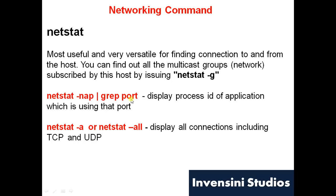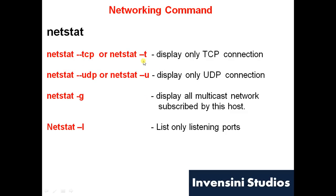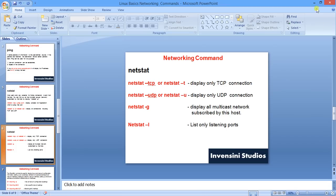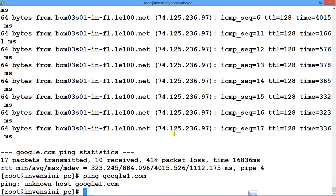To see all information, use 'netstat -a'. To filter by a particular port, pipe and grep it. Use hyphen-t for TCP, hyphen-u for UDP, hyphen-g for multicast networks subscribed to a port, and hyphen-l to see only listening ports. Netstat is very important — I've covered it in a separate tutorial called 'Mastering Netstat', and I'll place a link in this video.